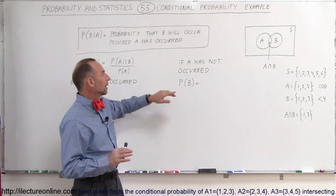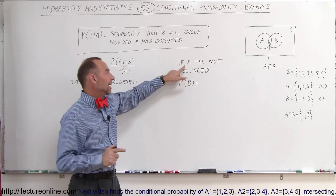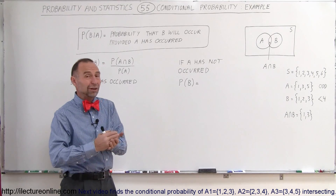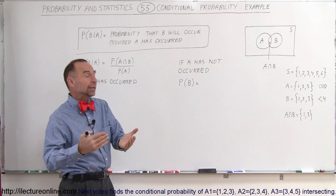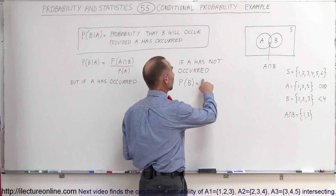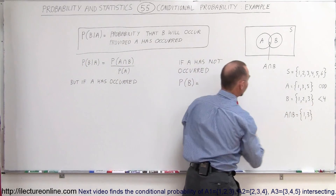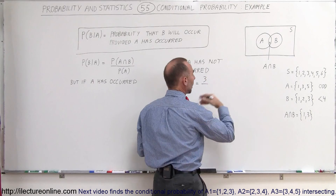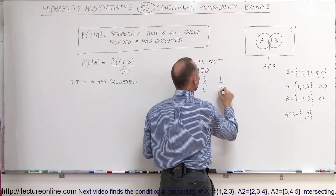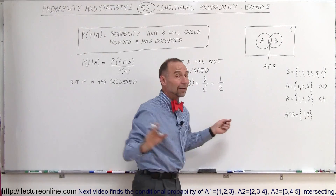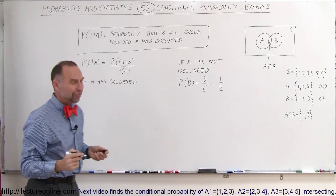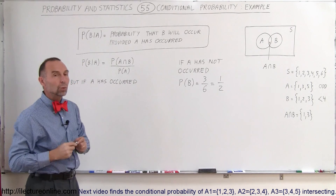What is the probability that B will occur if A has not occurred? You have no knowledge that A has occurred, so you're simply trying to figure out the probability that B has occurred. That's equal to the number of outcomes in B, which is 3, divided by the number of outcomes in the sample space, which is 6. So the probability that B will occur is 1/2 — a 50-50 chance.